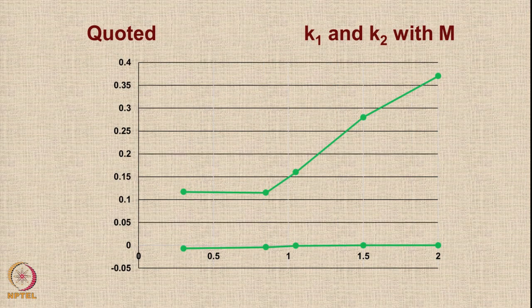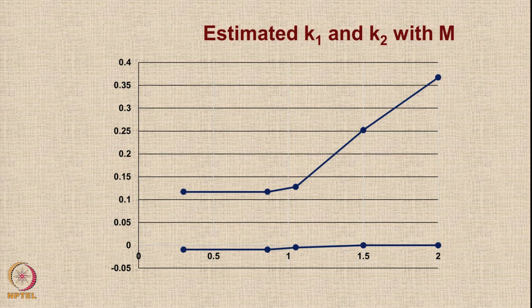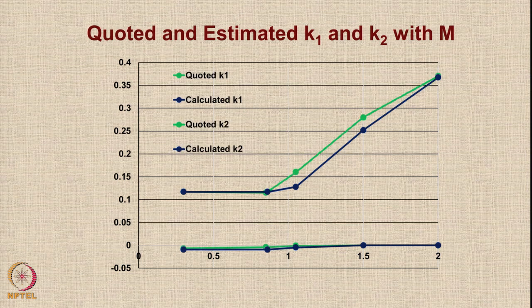Looking at quoted values of K1 and K2 variation with Mach number: K1 remains constant up to the critical Mach number of 0.85 and then starts rising, while K2 shows far smaller change in slope compared to K1. Estimating K1 and K2 using our methods and superimposing on the same graph, we realize we are under-predicting, and our values need to be properly determined.